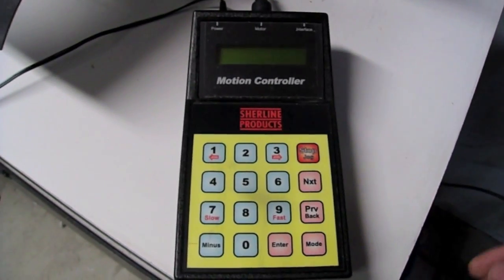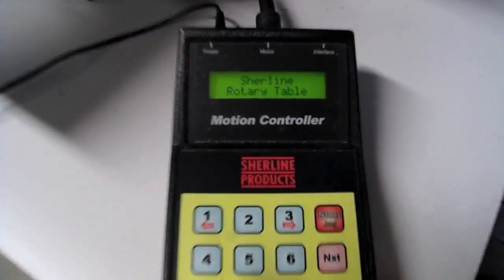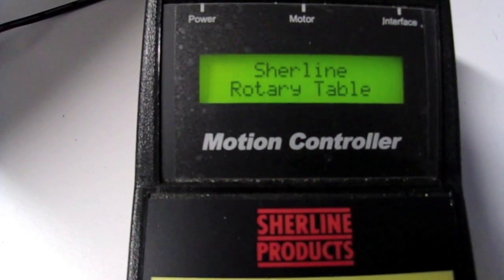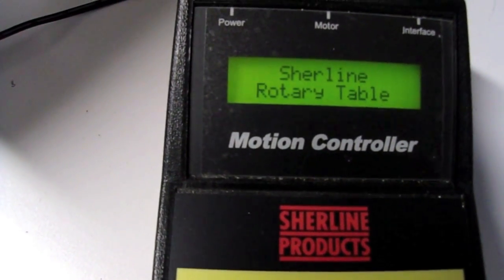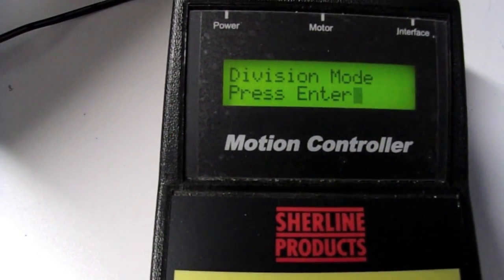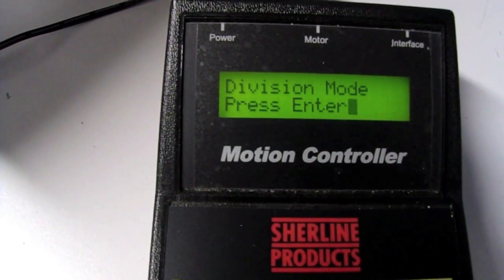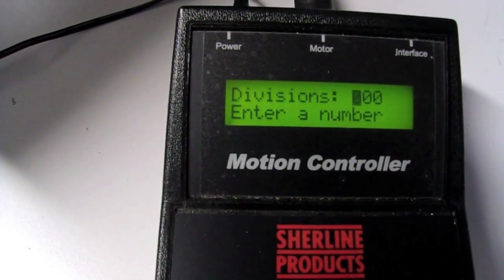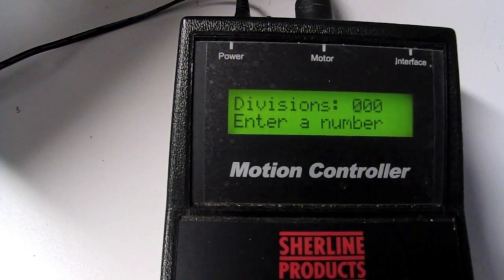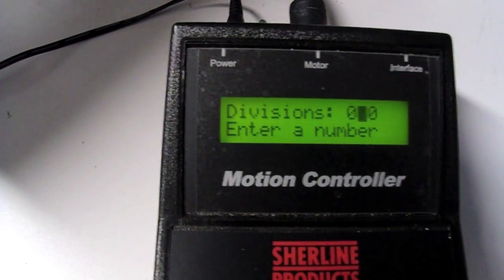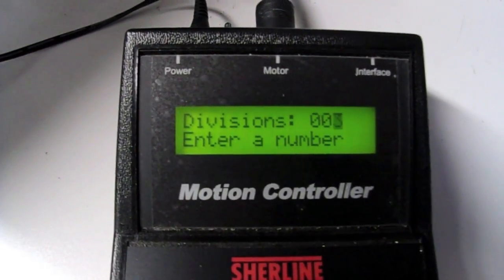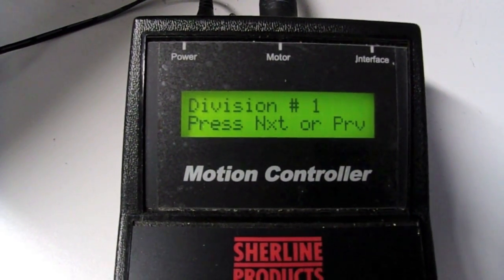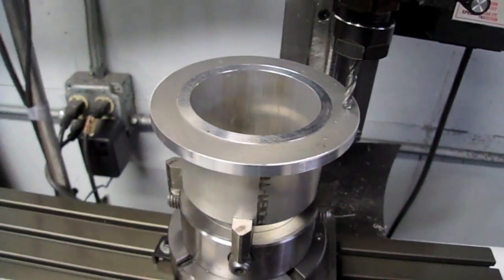Now I'm going to show you how I set up this motion controller for the rotary table. You can see the start screen. I'll hit enter, then hit mode. We want division mode, so we'll press enter. We'll enter how many divisions we want—003. We want three divisions on this part. Hit enter, and we're set at our first division, which is right here.